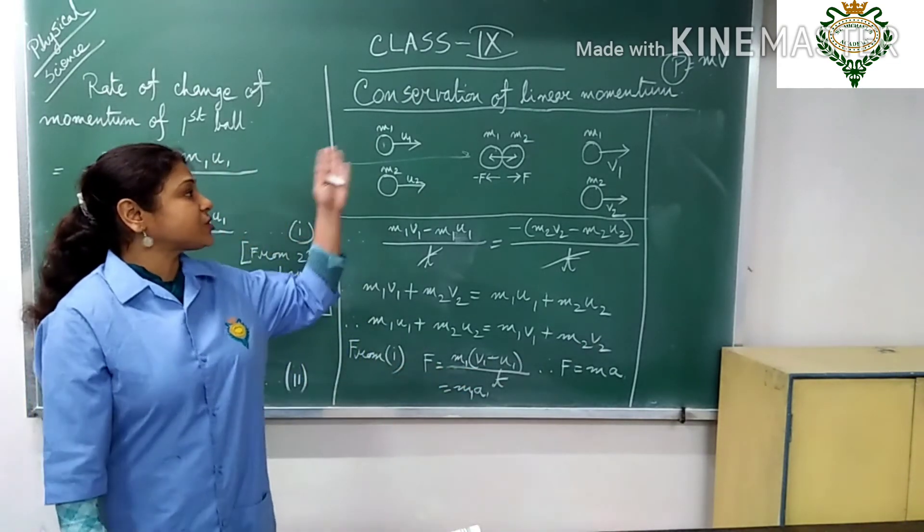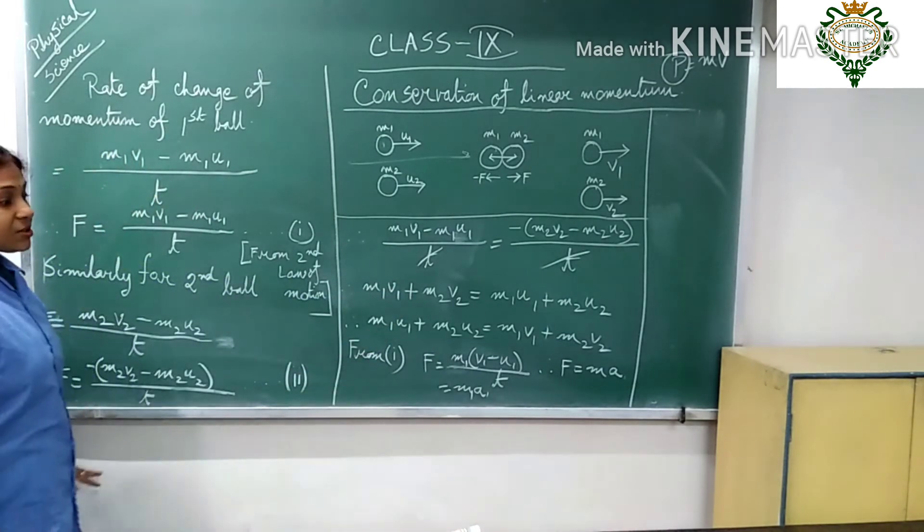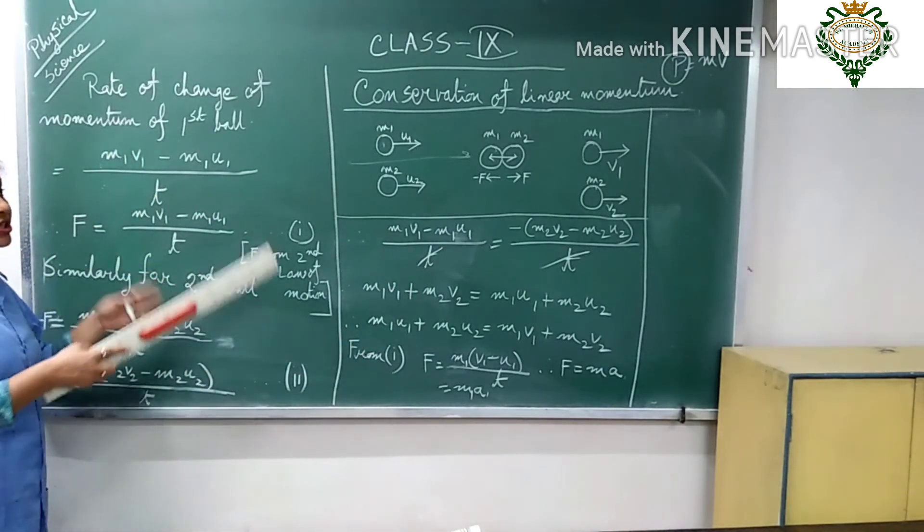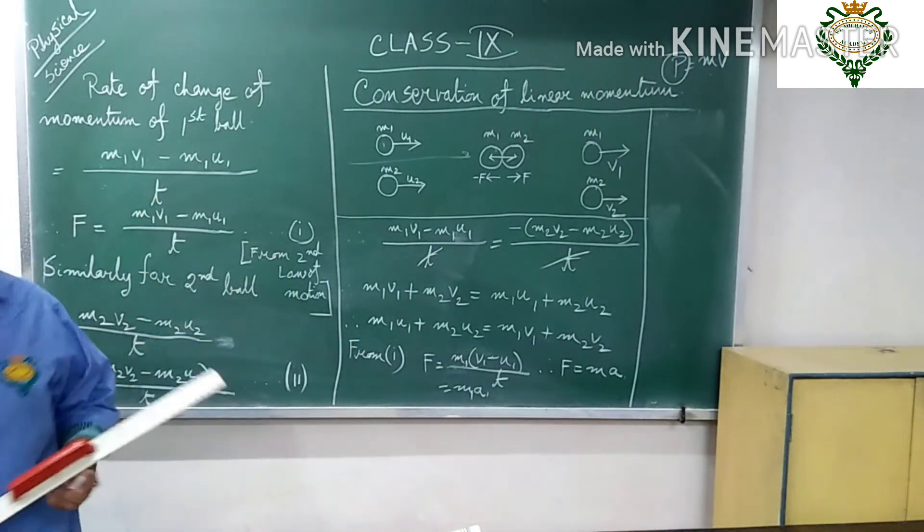So for conservation of linear momentum, you have to prove these two things: that total momentum before and after collision are equal, and that Newton's second law F equals MA follows from it.